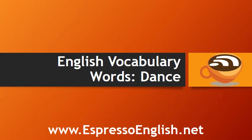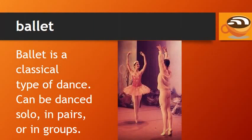English vocabulary words for dance from EspressoEnglish.net. Ballet is a classical type of dance. It can be danced solo, in pairs, or in groups. The T in ballet is silent.